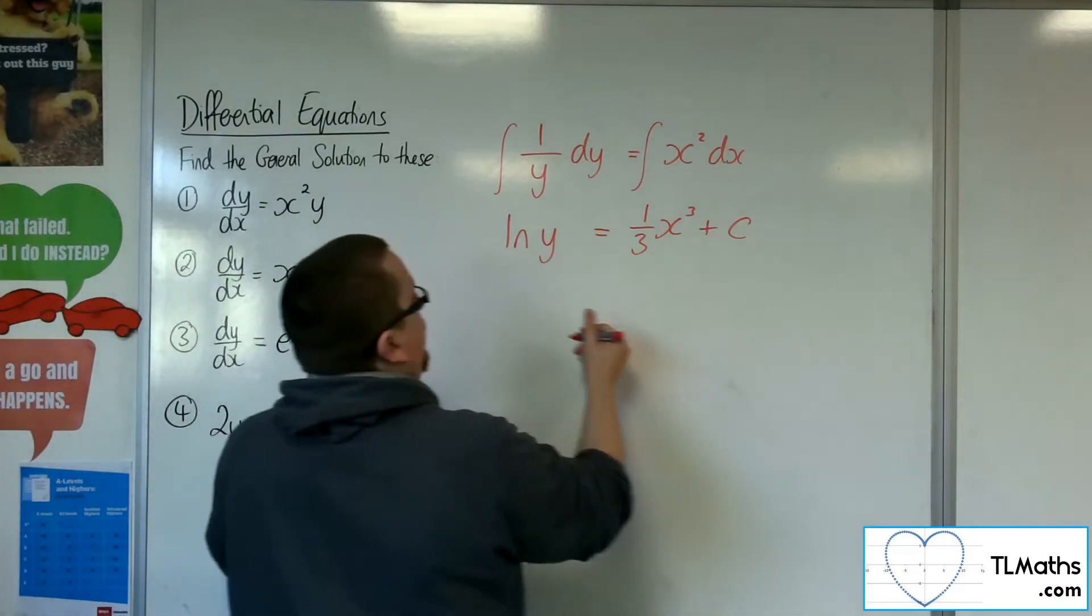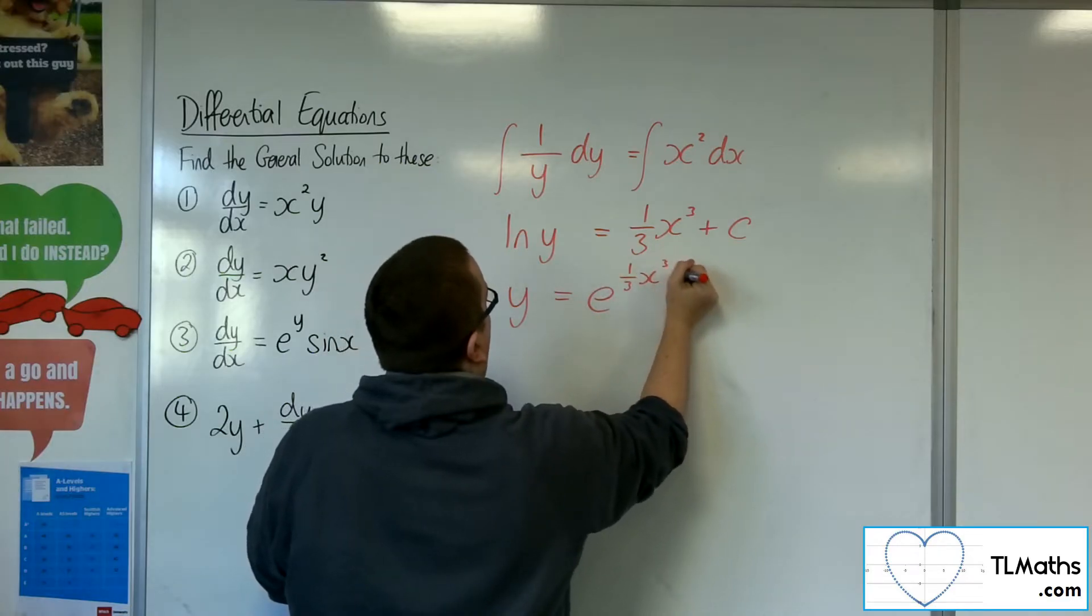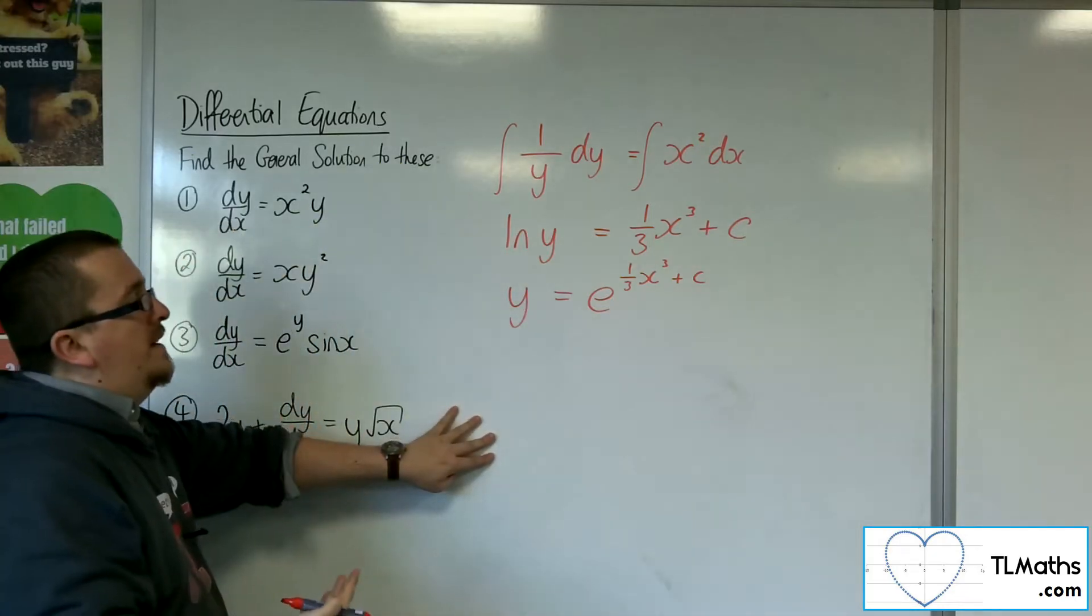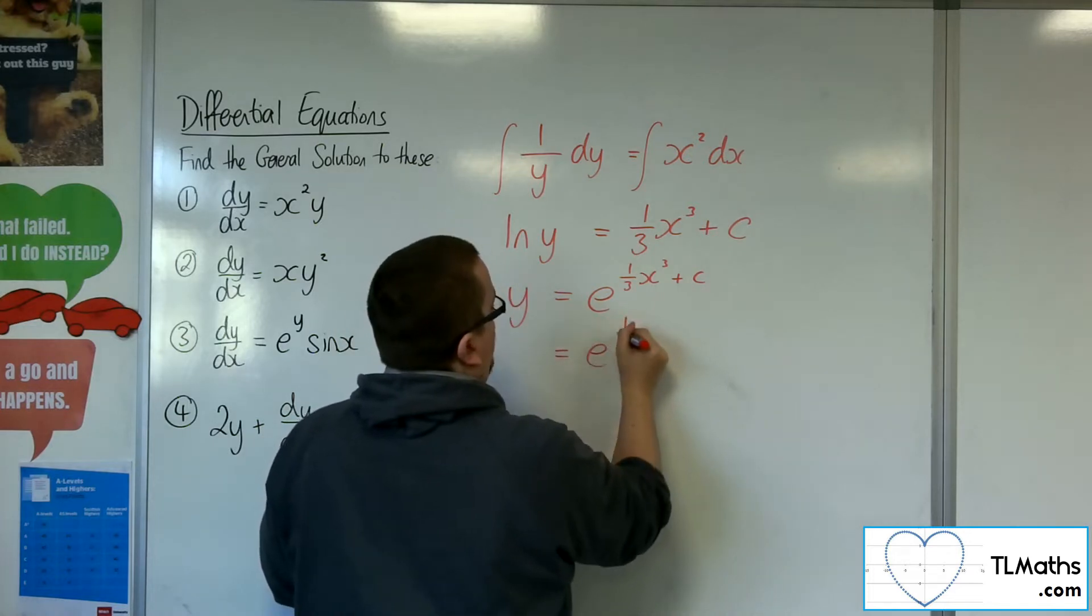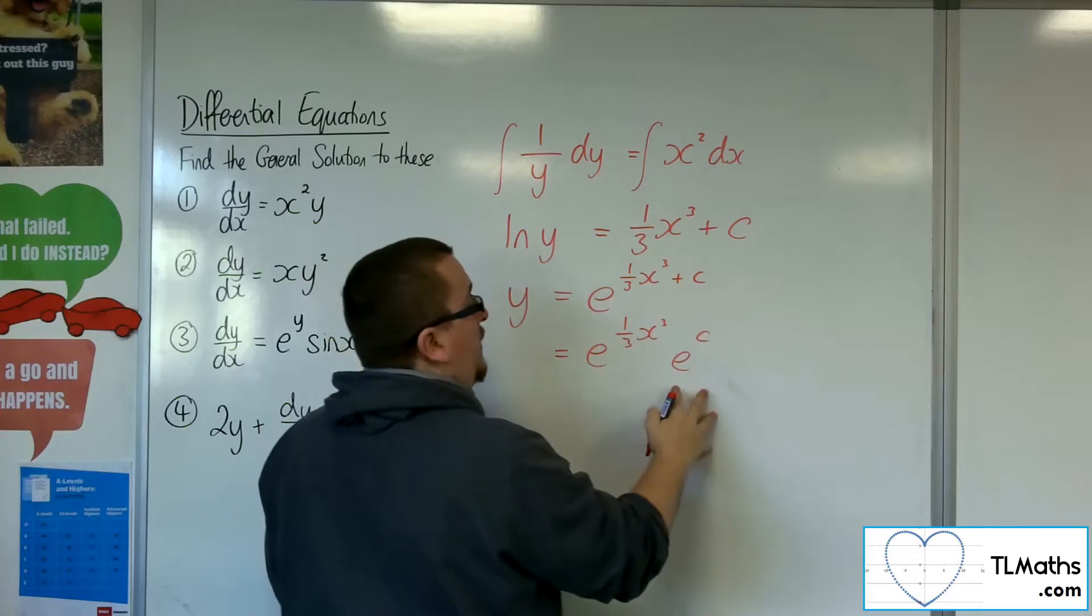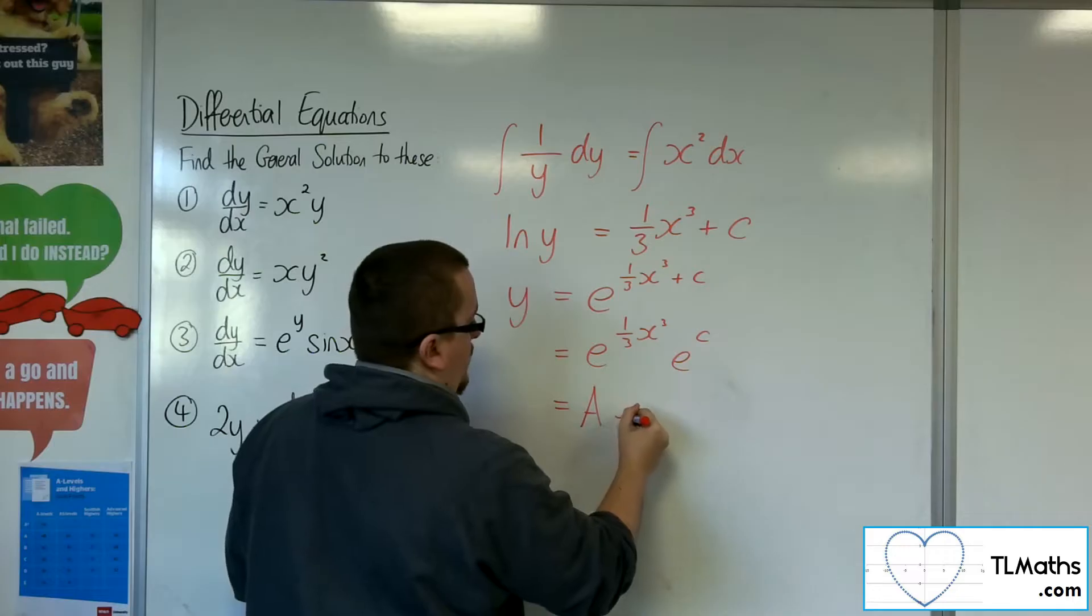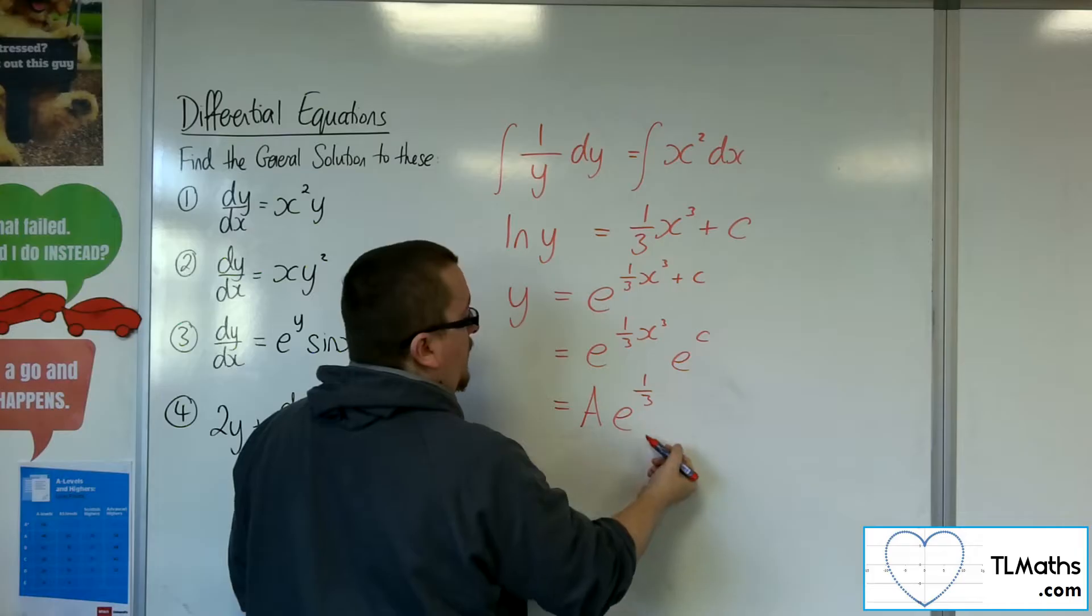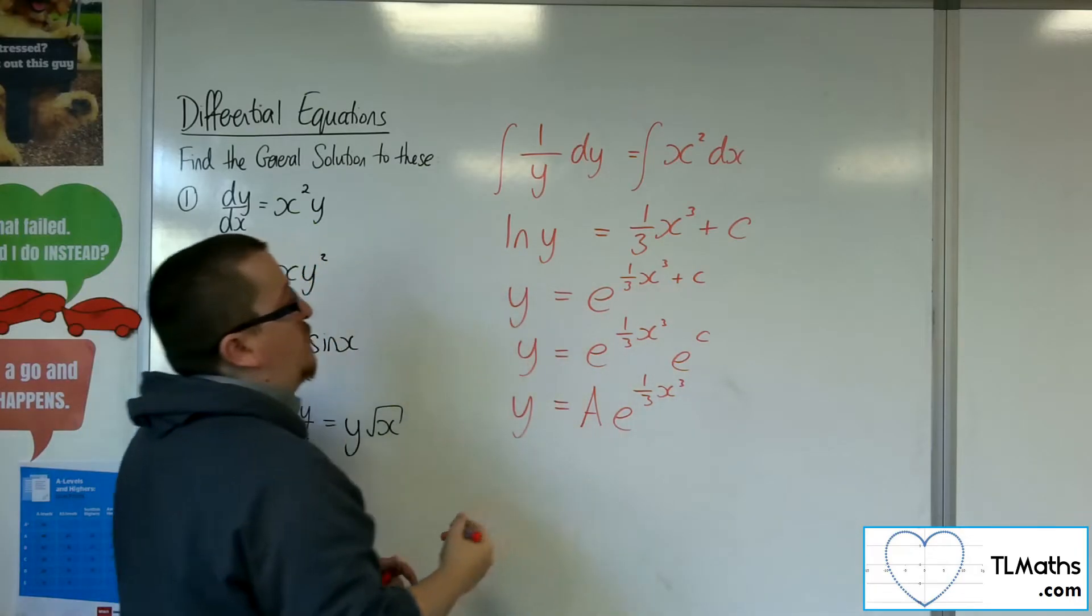Then you can e both sides, leaving you with y equals e to the 1 third x cubed plus c. Now if you remember from the previous video, I want to simplify that down to make it look a little bit neater. So this is the same thing as e to the 1 third x cubed times e to the c. And e to the c is just another constant. So I can replace that with another constant value. Let's call it a. So it's a times e to the 1 third x cubed. And that is my general solution.